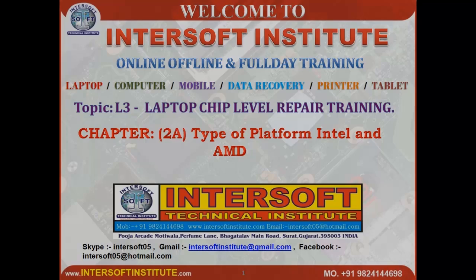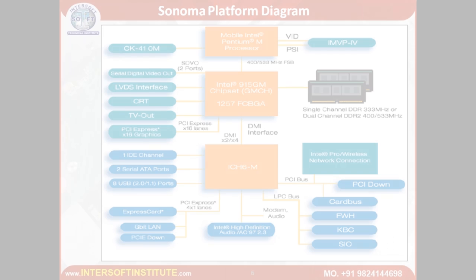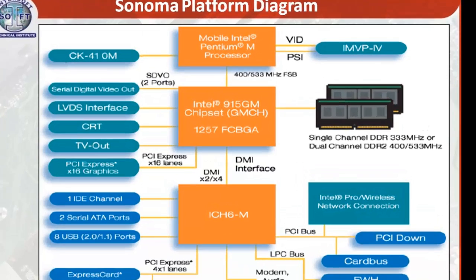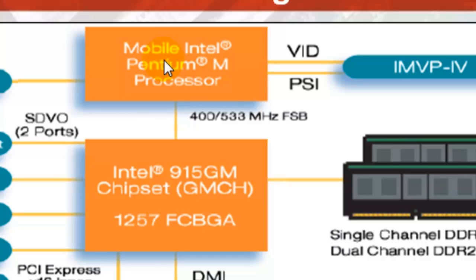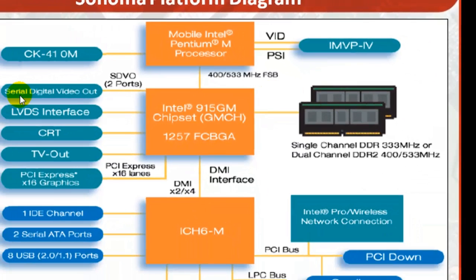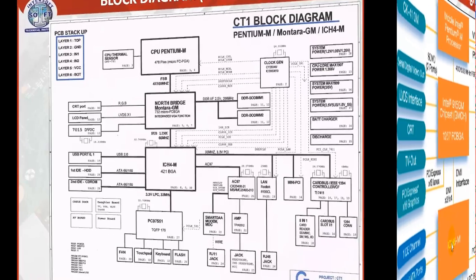Chapter 2: Types of platforms — Intel and AMD. The Sonoma platform block diagram shows the CPU connected with the North bridge. North bridge is connected with the RAM, output, input, and PCI Express graphic. The CPU also has a thermal sensor.